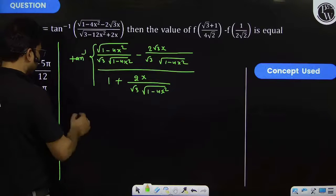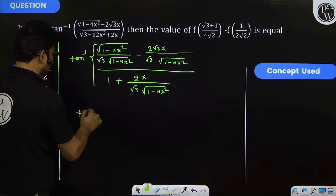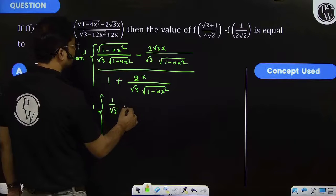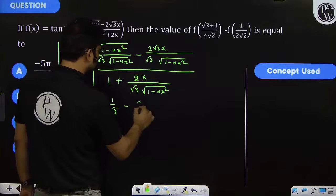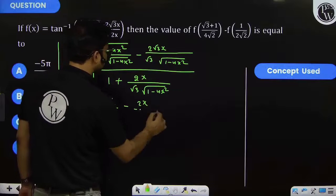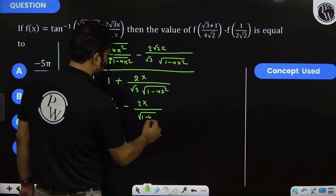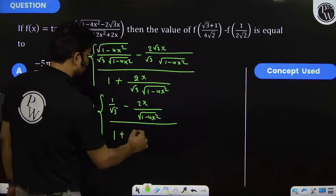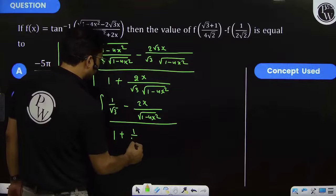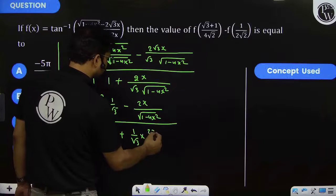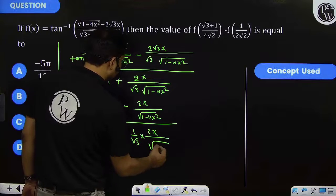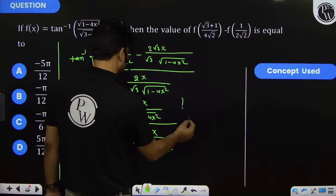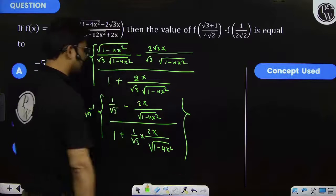We will get tan inverse of [1/√3 - 2x/√(1 - 4x²)] divided by [1 + (1/√3)·(2x/√(1 - 4x²))]. This is the expression.